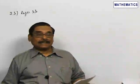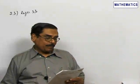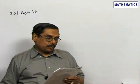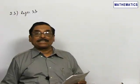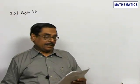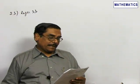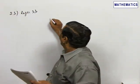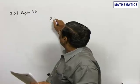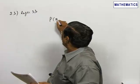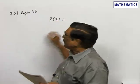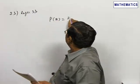Now refer problem number 33. The probabilities of A and B to pass an examination is 2 by 10 and 3 by 10. Call the first event as A. The probability of A passing in the examination is 2 by 10.